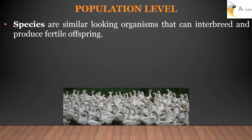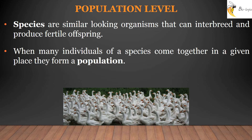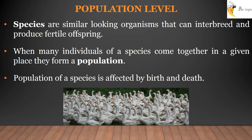Species are organisms that look similar and interbreed to produce fertile offspring. When many individuals of a species come together in a given place, they form a population. The number of individuals in a population are affected by birth, death, migration, and many other factors. Lion, tiger, leopard, and cat are different species of animals.